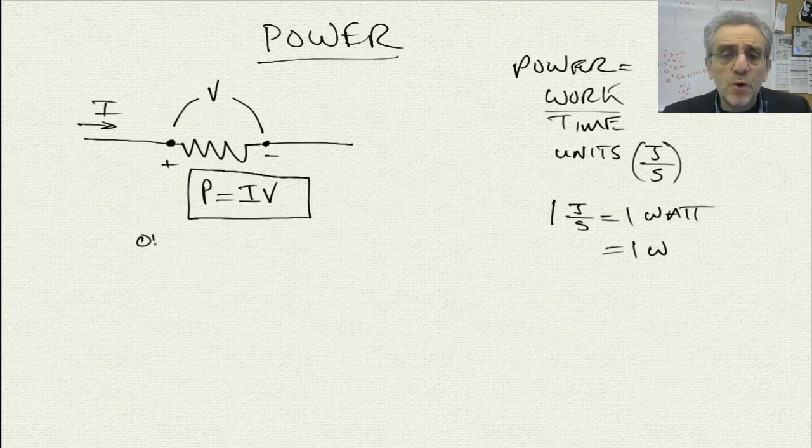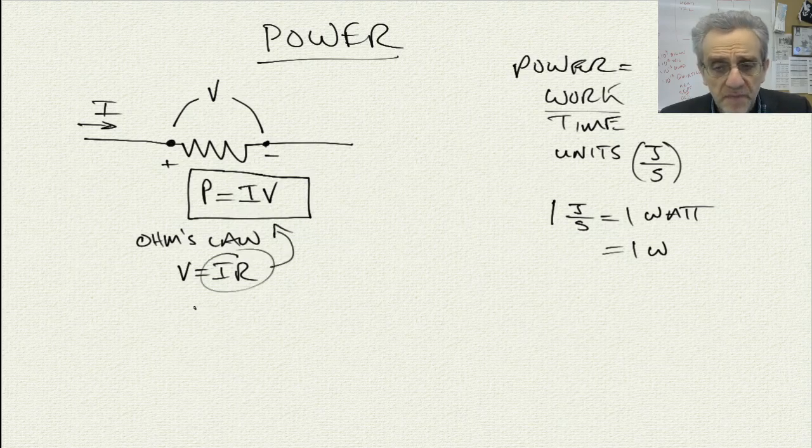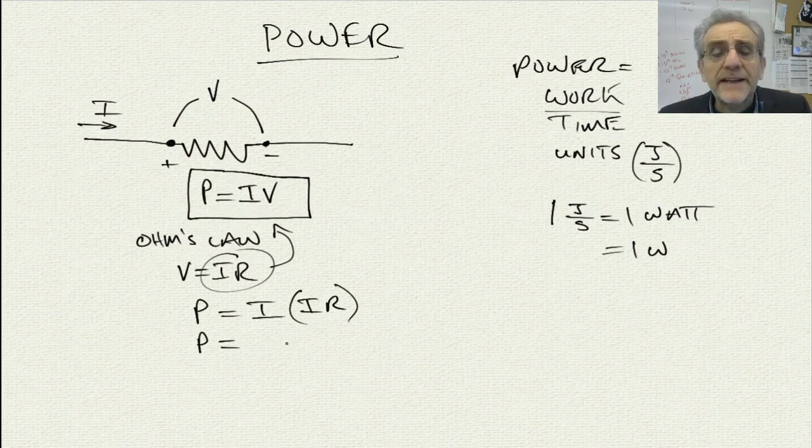So if we apply Ohm's law and state that voltage equals IR, if we substitute this into this equation for V, we'll get P equals I times, instead of writing V now, we'll write I times R. And this now provides us with a second equation for power, which is I squared R.